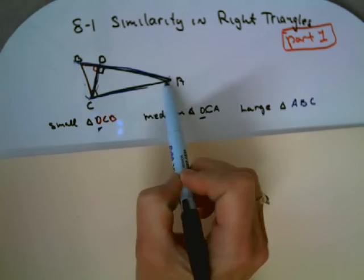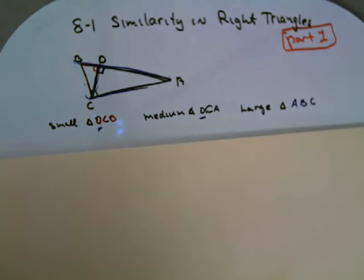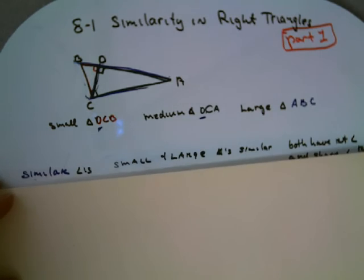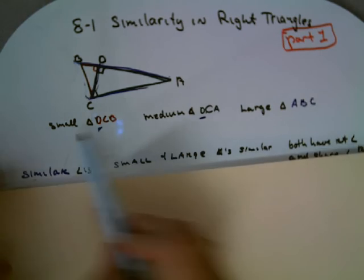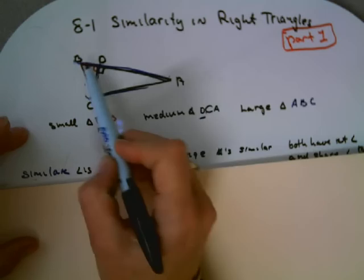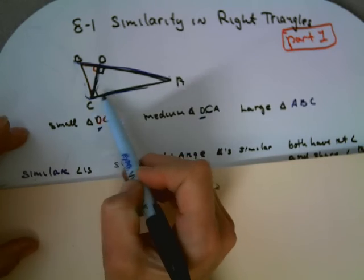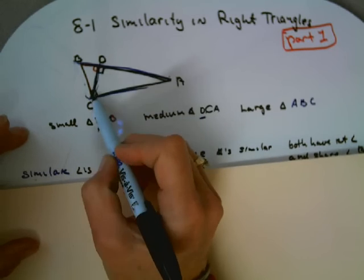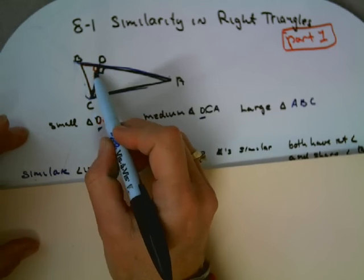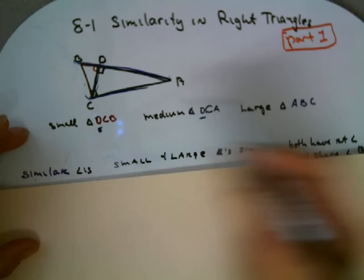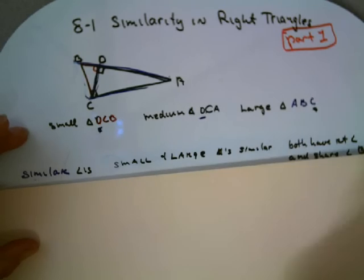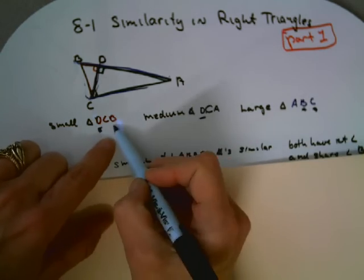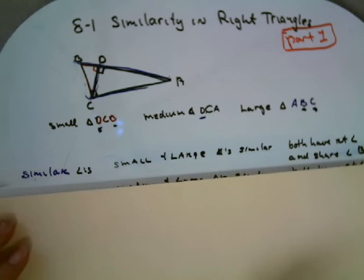Now, these triangles have an interesting relationship. If you were to look at the small triangle and the large triangle, you see they both have a right angle. D is a right angle for the small one, and C is a right angle for the large one, and they also share angle B. So by angle-angle similarity, they're similar triangles, the small and the large triangles.